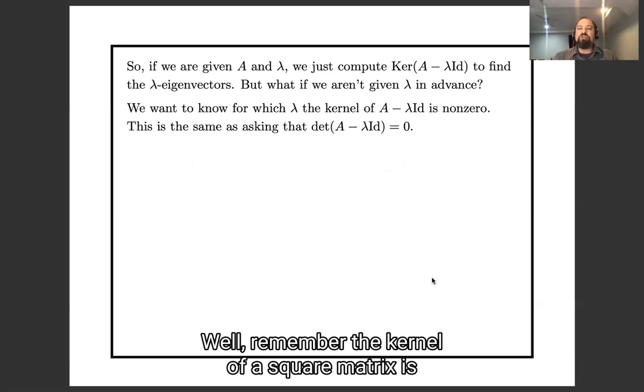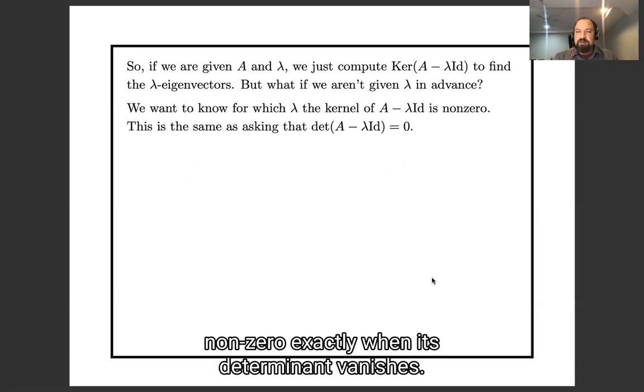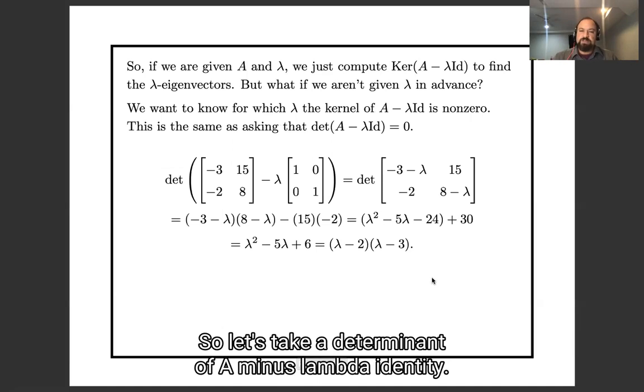Well, remember, the kernel of a square matrix is non-zero exactly when its determinant vanishes. So let's take a determinant of A minus lambda identity.